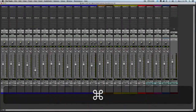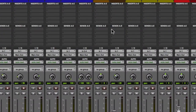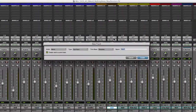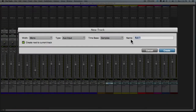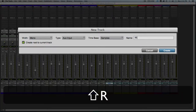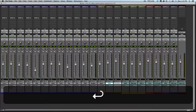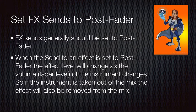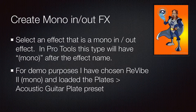First, we're going to select the tracks that we want to send — in this case just one — and then we're going to choose new track from the send. We're going to choose a mono aux input track, name it appropriately, and then click Create. Effects sends should generally be set to post-fader so that the effects level changes with the level of the instrument. When loading a plugin, we'll look for one with 'mono' in parentheses after its name, indicating it is mono in and mono out. For demonstration purposes I'm choosing just a generic preset.